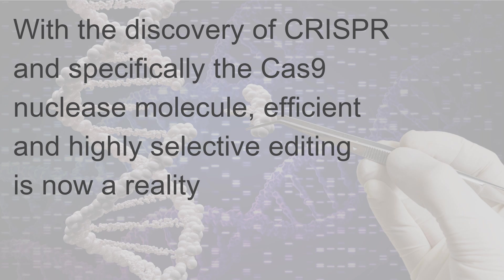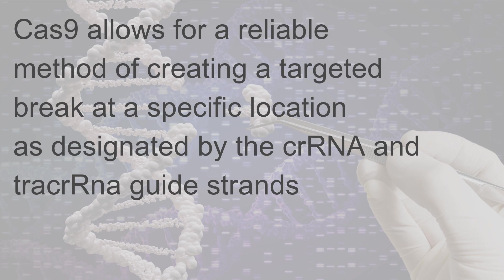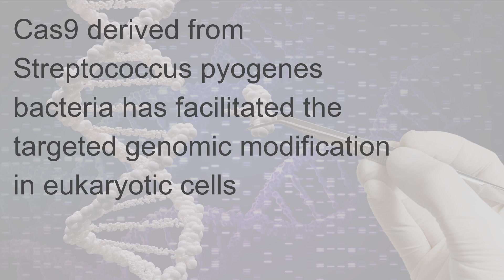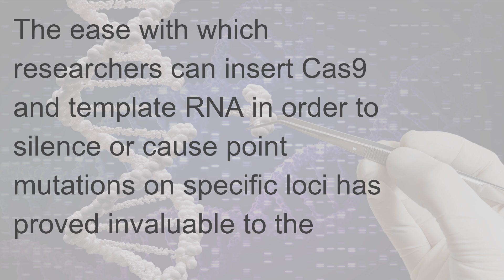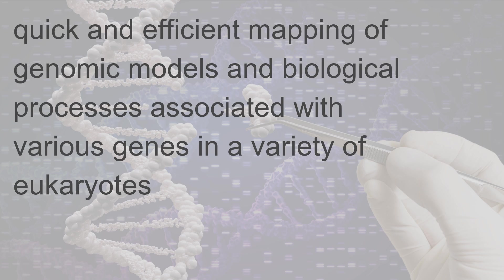With the discovery of CRISPR and specifically the Cas9 nuclease molecule, efficient and highly selective editing is now a reality. CRISPR-Cas9 allows for a reliable method of creating a targeted break at a specific location as designated by the crRNA and tracrRNA guide strands. CRISPR-Cas9 derived from Streptococcus pyogenes bacteria has facilitated targeted genomic modification in eukaryotic cells. The ease with which researchers can insert Cas9 and template RNA in order to silence or cause point mutations on specific loci has proved invaluable to the quick and efficient mapping of genomic models and biological processes associated with various genes in a variety of eukaryotes.